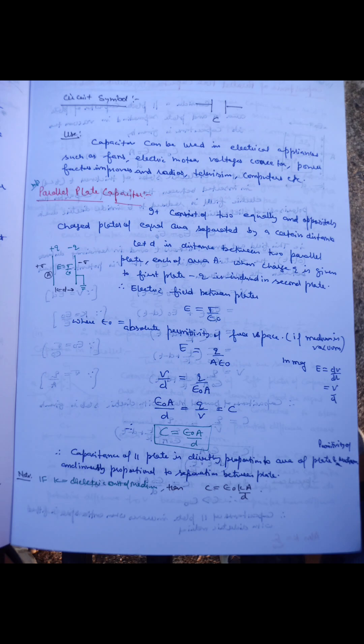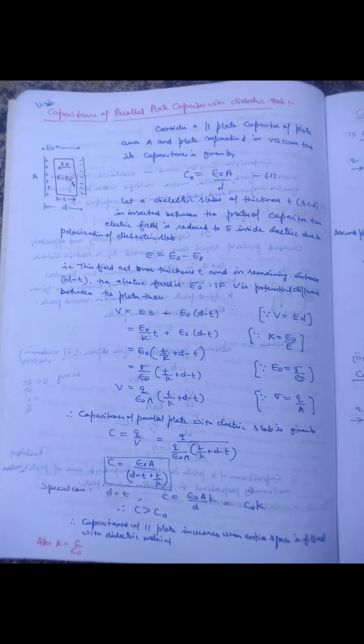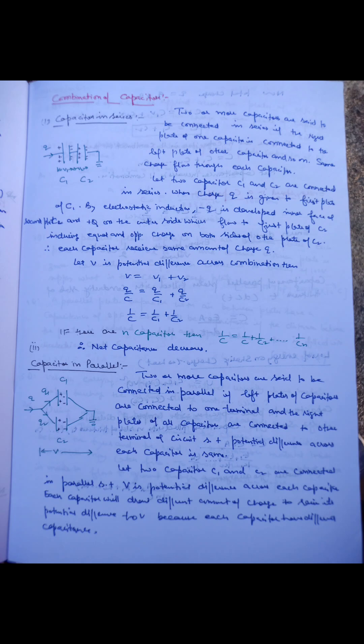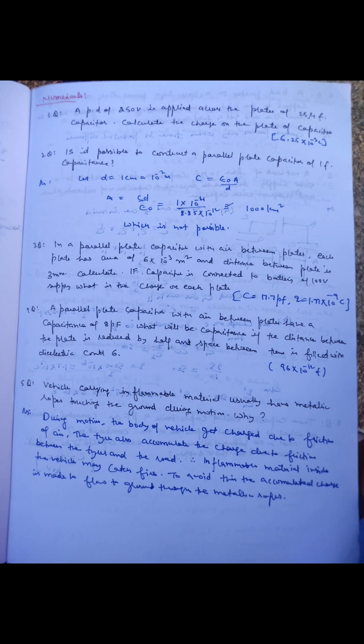An arrangement used for storing a large amount of charge is called a capacitor. The capacitance of a parallel plate capacitor with plate area A and separation d is C = ε₀A/d. When a dielectric slab of dielectric constant k is placed between the plates, capacitance becomes k times the original value. When capacitors are connected in series the net capacitance decreases; in parallel it increases. Energy stored in a capacitor is ½CV², and energy density (energy per unit volume) is ½ε₀E², where E is the electric field between the plates.